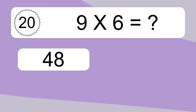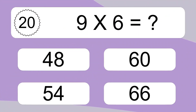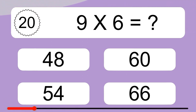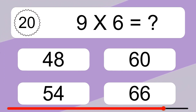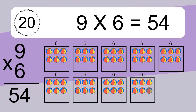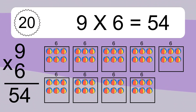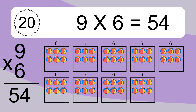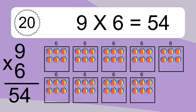9 times 6 equals what? 9 times 6 equals 54. We have 9 boxes, and each box has 6 colorful balls inside. If you count all the balls in all the boxes together, you will have 9 times 6 balls. This equals 54 balls.